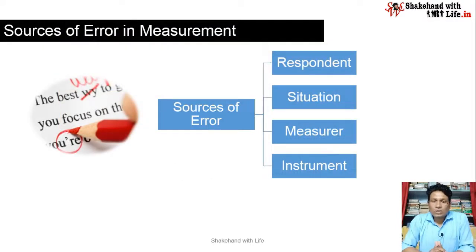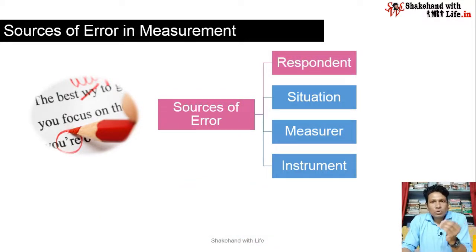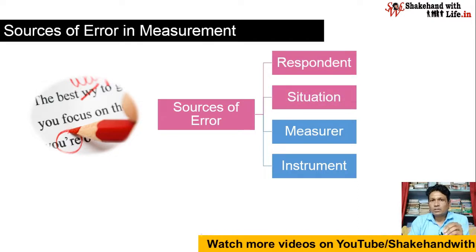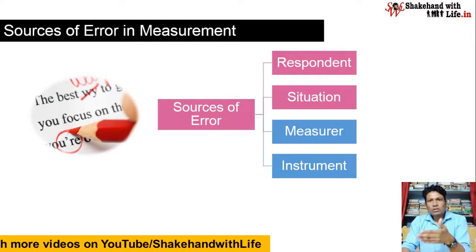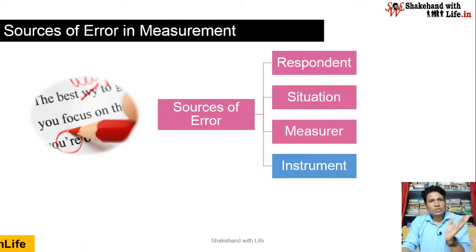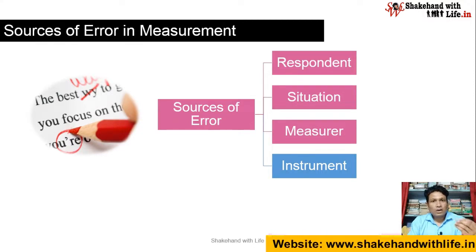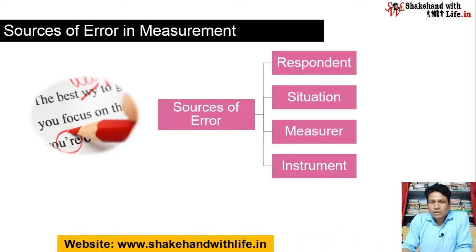Now taking a look over the sources of error in measurement, we have 4 sources of error. The first one is Respondent, who responds to the questions of the questionnaire. The second one is Situation — the behavior of the respondent changes with the situation. The third one is Measurer, who processes the responses of the questions in the questionnaire. And the last one is Instrument, like the questionnaire.